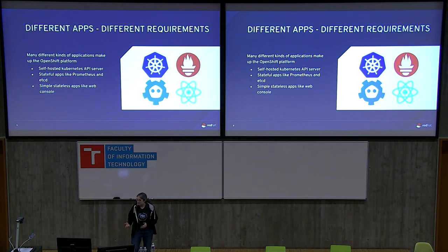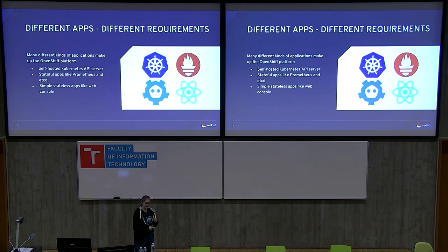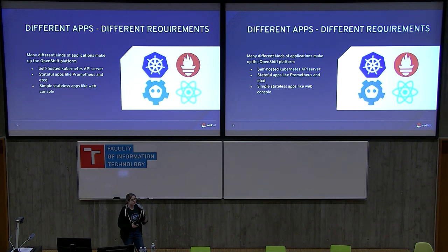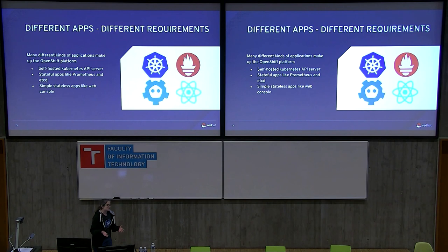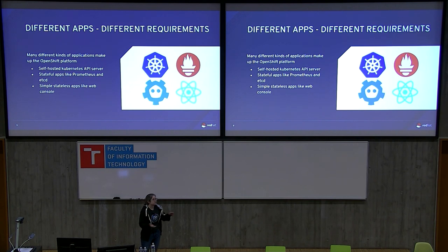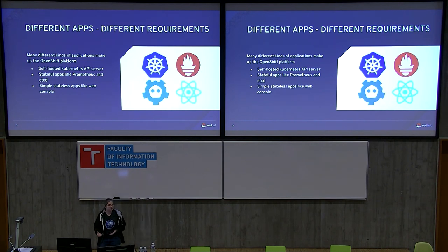Even within OpenShift, they're not the same. The Kubernetes API server has unique problems — it's controlling the platform, and if it rolls over too quickly, everything watching the API server loses its connection. Our stateful applications like Prometheus and etcd have their own unique challenges around disaster recovery. And something as simple as our web console doesn't require a lot — it just has to roll itself out using existing Kubernetes concepts, so its operator can be very simple with very little configuration.